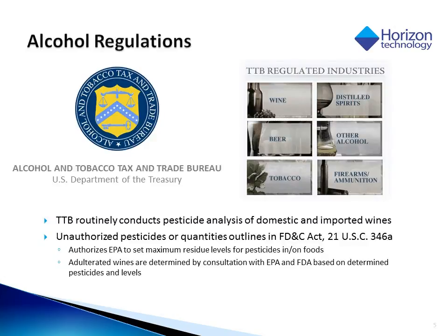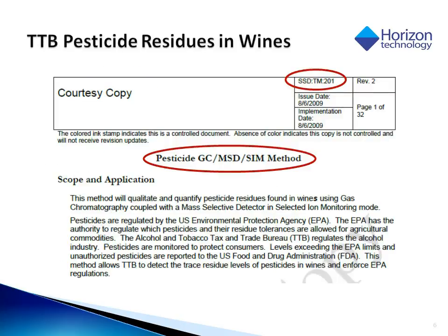The Alcohol and Tobacco Tax and Trade Bureau routinely conducts pesticide analysis of domestic and imported wines. Regulations authorize the EPA to set maximum residue levels for pesticides in and on foods. Adulterated wines are determined by consultation with EPA and FDA, based on determined pesticides and levels. Attached is the Alcohol and Tobacco Tax and Trade Bureau's regulated method for extracting pesticides in wine, which is the method we are referencing for this particular study.